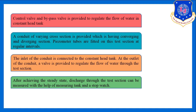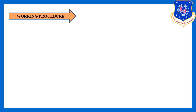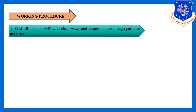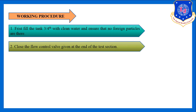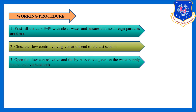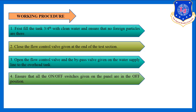The procedure begins by filling the sump tank three-quarters full with clean water, ensuring no foreign particles are present, as solid particles could choke the centrifugal pump. Next, close the flow control valve at the end of the test section, then open the flow control valve and bypass valve on the water supply line to the overhead tank.